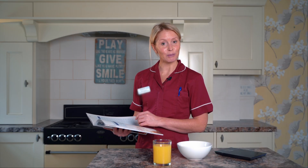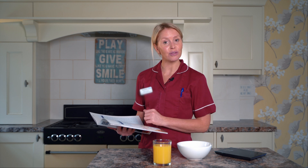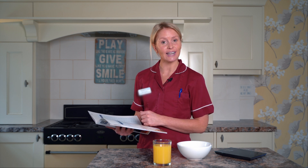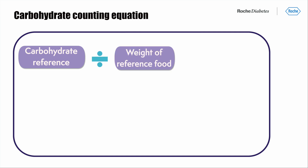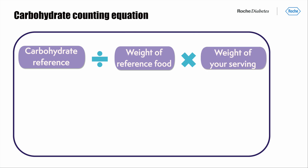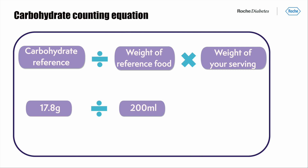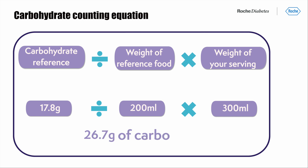Here they have calculated that in 200ml of orange juice there are 17.8g of carbohydrates. But let's make this a little bit more difficult — let's pretend our glass is actually 300ml of orange juice and try to calculate that together. To calculate this we use: carbohydrates in reference food divided by weight of reference food, times by the weight of my serving. So 17.8g divided by 200g, times by 300g, gives us 26.7g of carbohydrates.